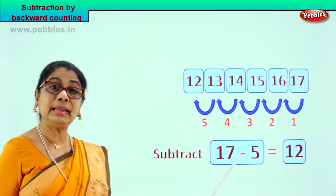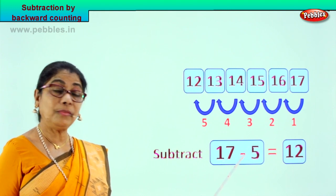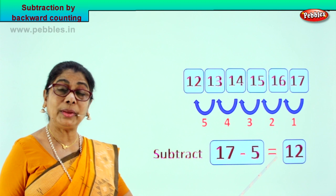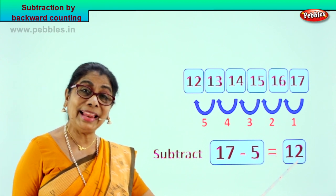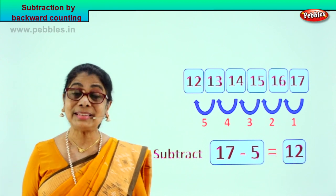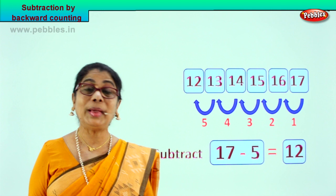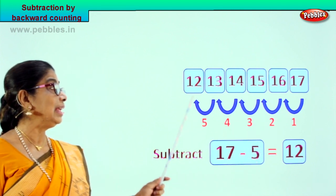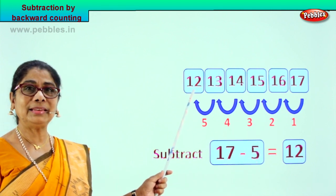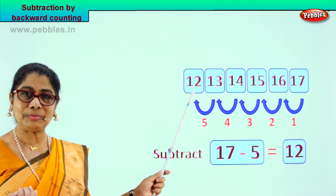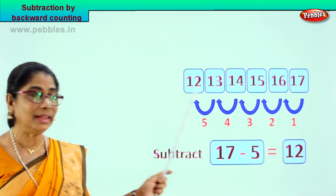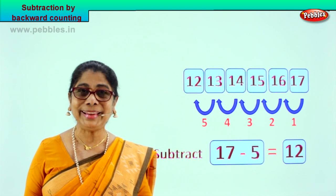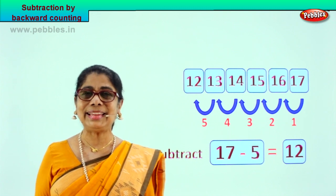17 take away 5 is equal to 12. From 17, take 5 steps backward and you arrive at the answer: 12. Did you enjoy doing it? Very interesting, isn't it? Shall we take another sum?